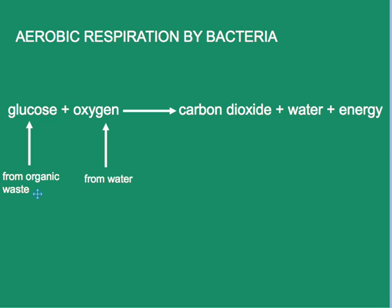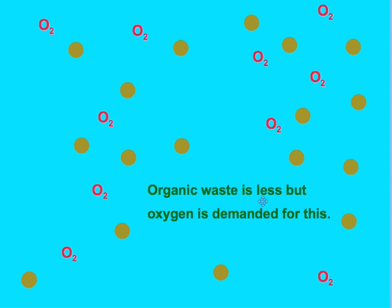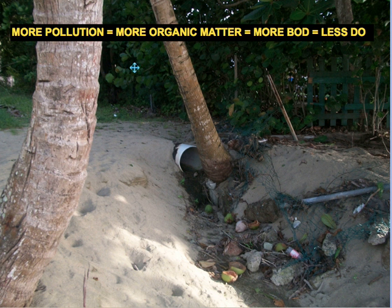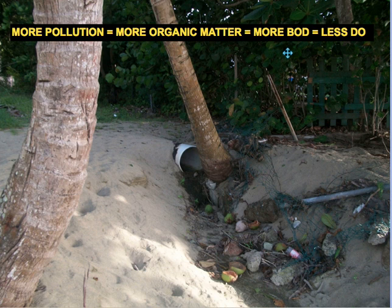As organic material is decomposed, oxygen is depleted. This loss of oxygen happens because aerobic bacteria feed on organic waste as a source of energy — they consume oxygen. The more organic waste present, the more bacteria grow, multiply, and metabolize the waste, consuming more oxygen. It is this high organic load that demands a high volume of oxygen to be decomposed. As organic waste is degraded and decreases, dissolved oxygen falls. More pollution introduces more organic matter, which places a high demand on oxygen, leaving less dissolved oxygen in the system.